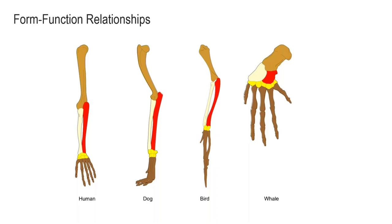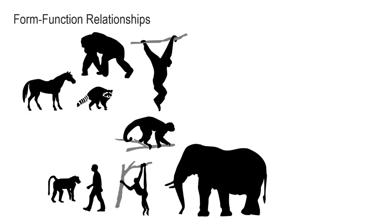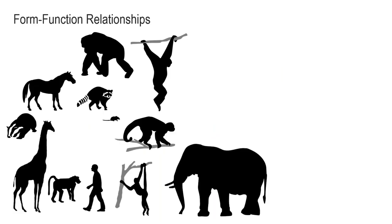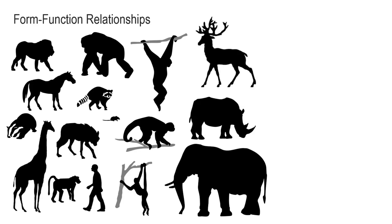There are a number of important reasons to research form-function relationships. Understanding them will help us understand the vast diversity of life on the planet — there's a huge amount of morphological variation both between species and within species — and understanding these relationships will help us contextualize that morphological variation within the behavioral and functional diversity that we see.